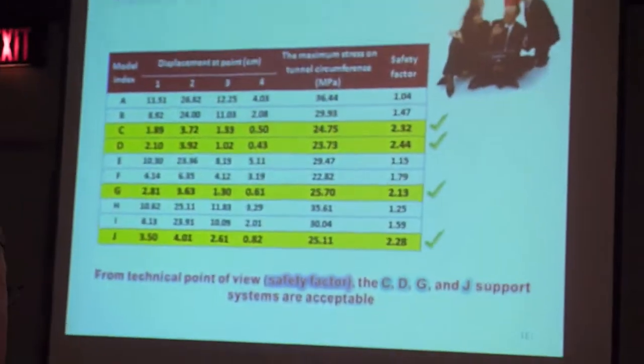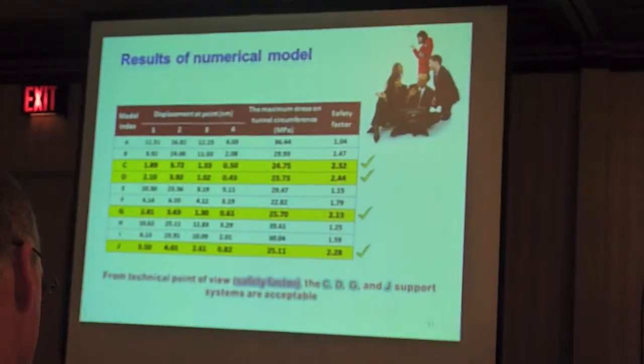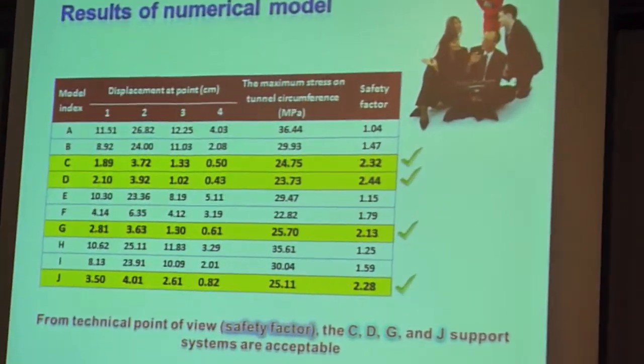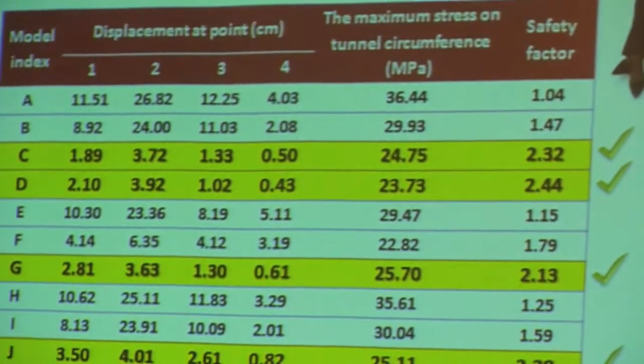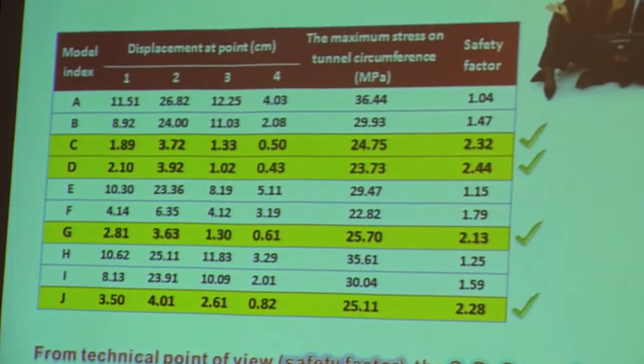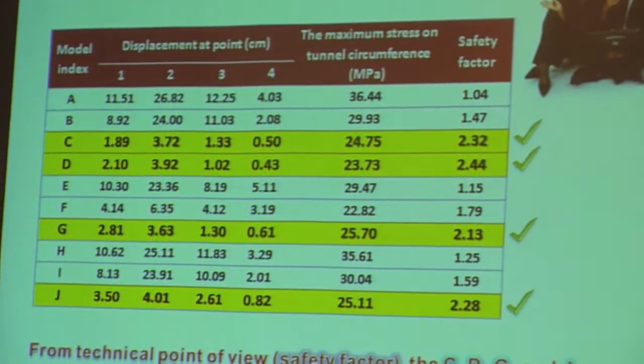The numerical model gave us these results. As you can see, only four of these systems — C, D, G, and J — gave us a factor of safety of more than two. So, technically speaking, or from a performance point of view, only these four are acceptable.